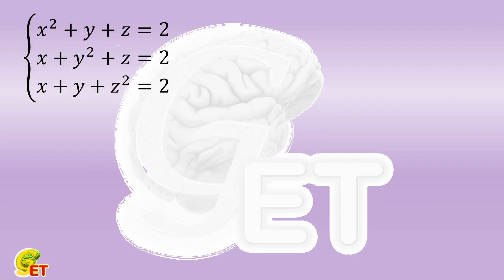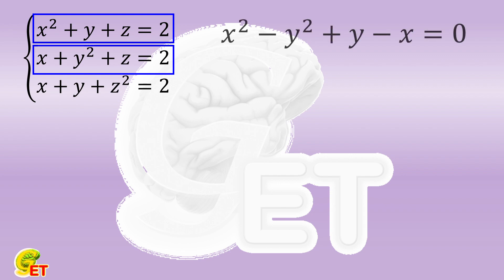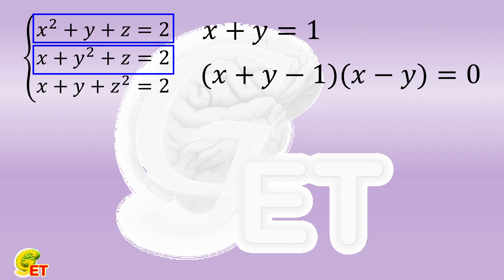We first subtract the second equation from the first one and get the square of x minus the square of y plus y minus x equals zero. By using the square of the difference formula, followed by combining like terms, we get x plus y minus 1 multiplied by x minus y equals zero. That is, either x plus y equals 1, or x equals y.